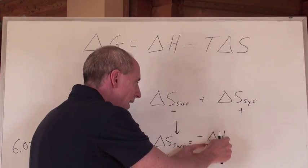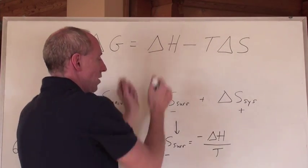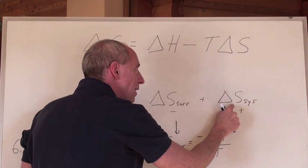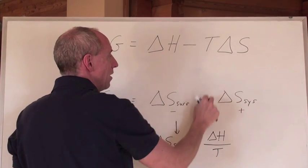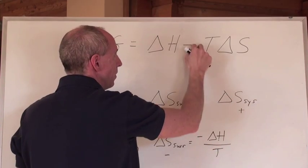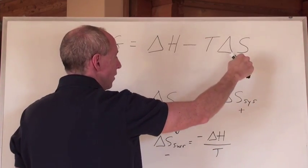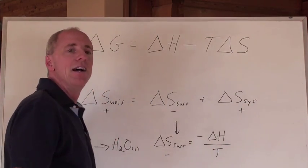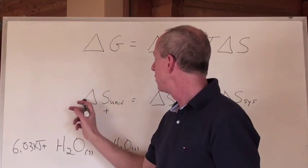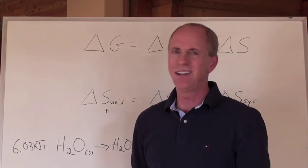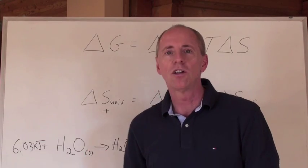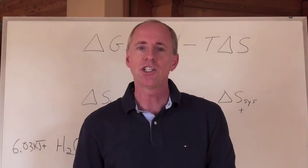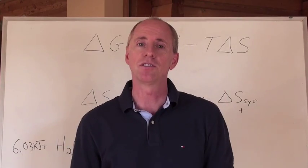If I multiply this by negative T, I get delta H. But if I multiply this by negative T, I get a negative T delta S system. And if I multiply the delta S universe by negative T, here's what I get, a delta G. Delta G is called Gibbs free energy, the change in energy, or free energy of a system.